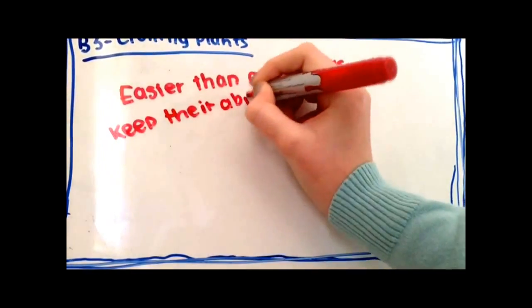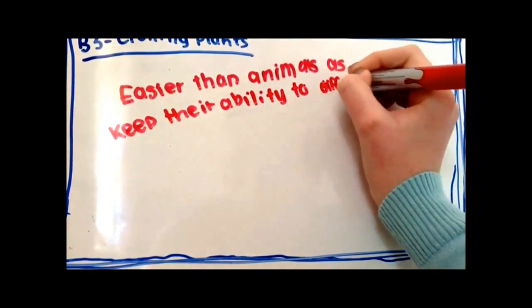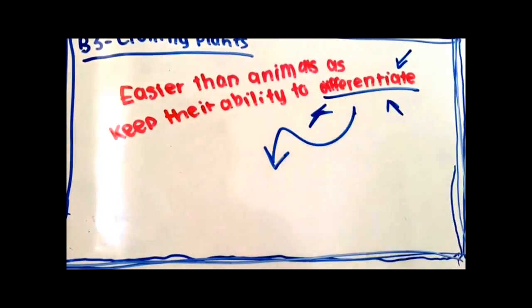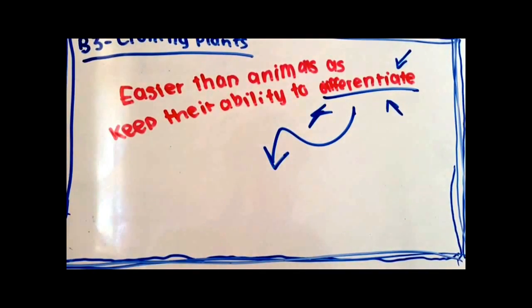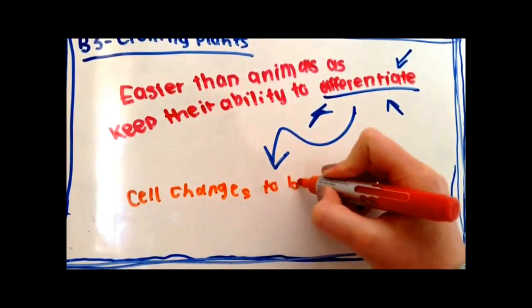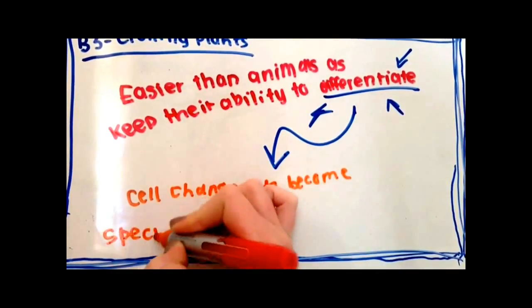Cloning plants is easier than cloning animals because they keep their ability to differentiate. Differentiate is a very important word and basically means to specialize for a certain job. Animal cells lose this ability at an early stage.